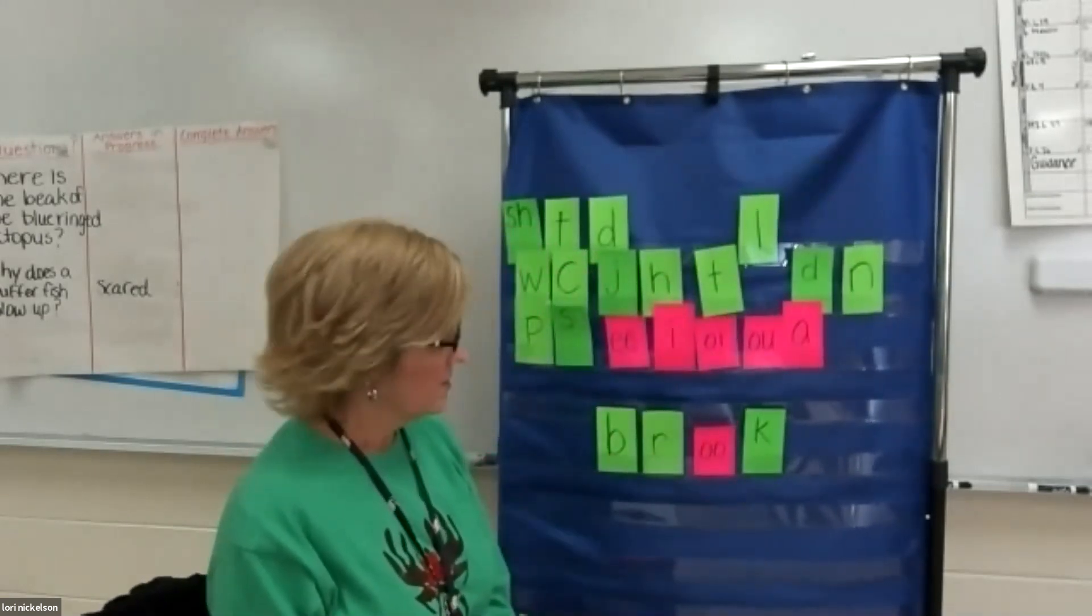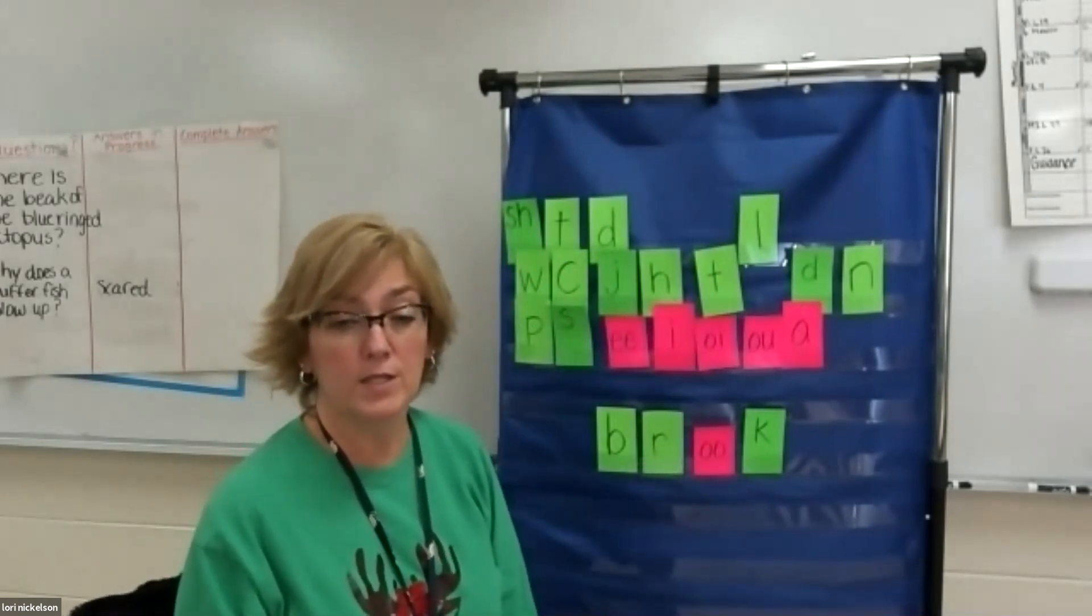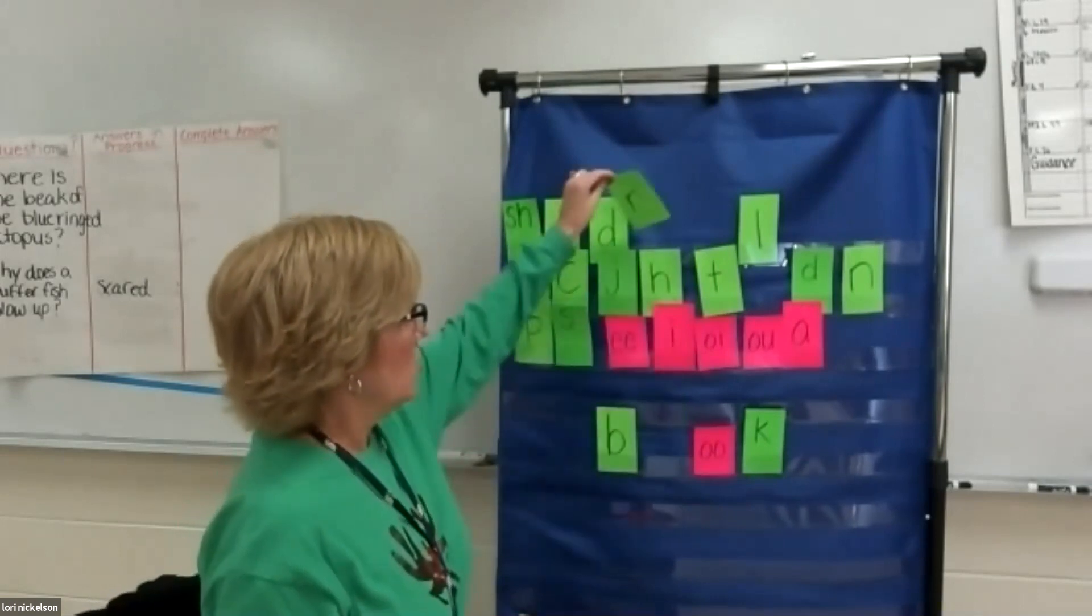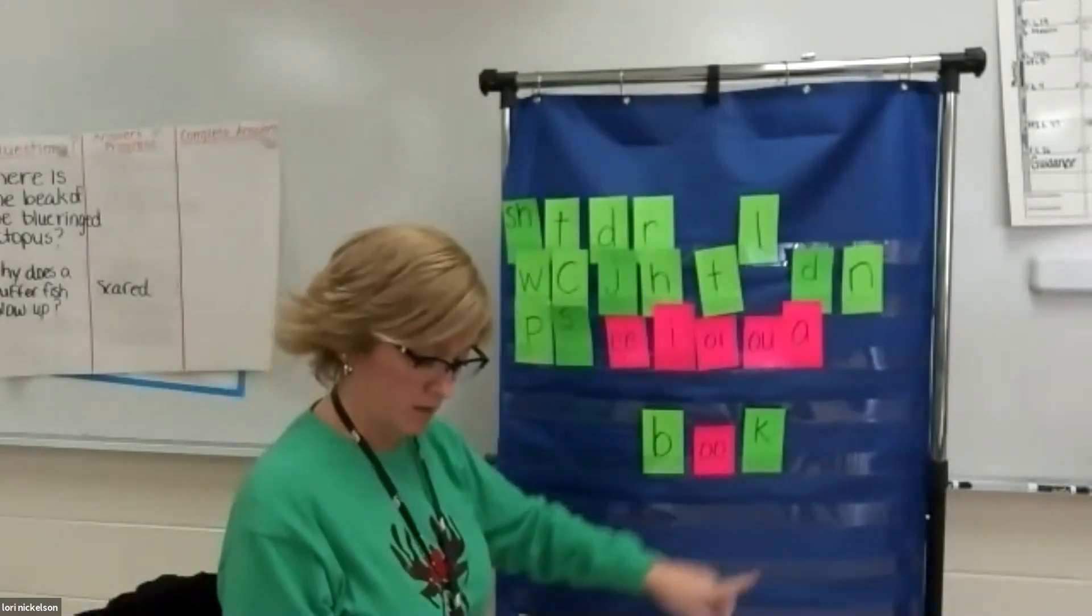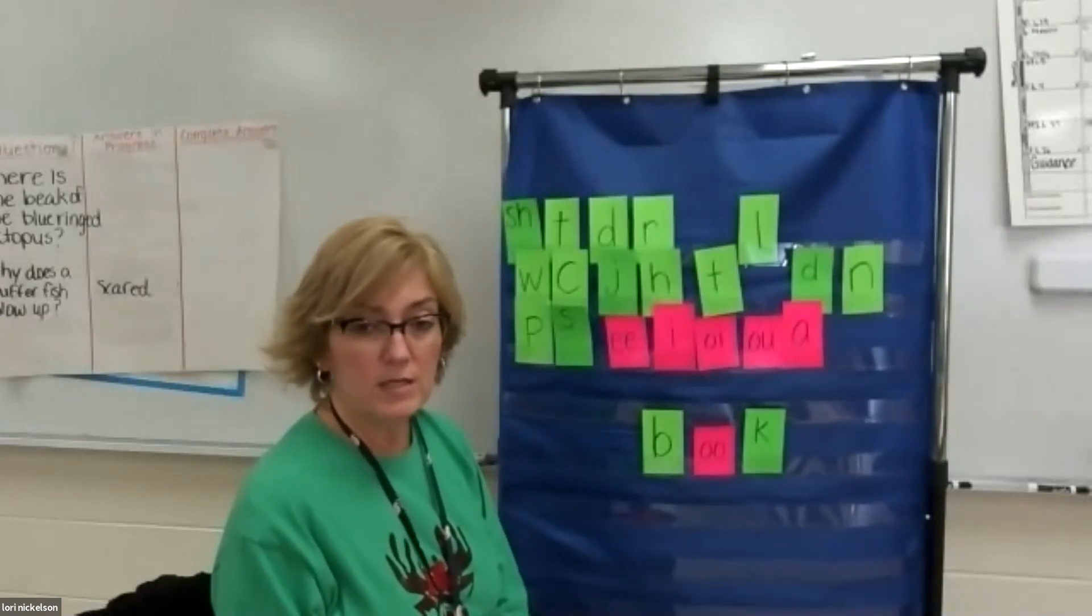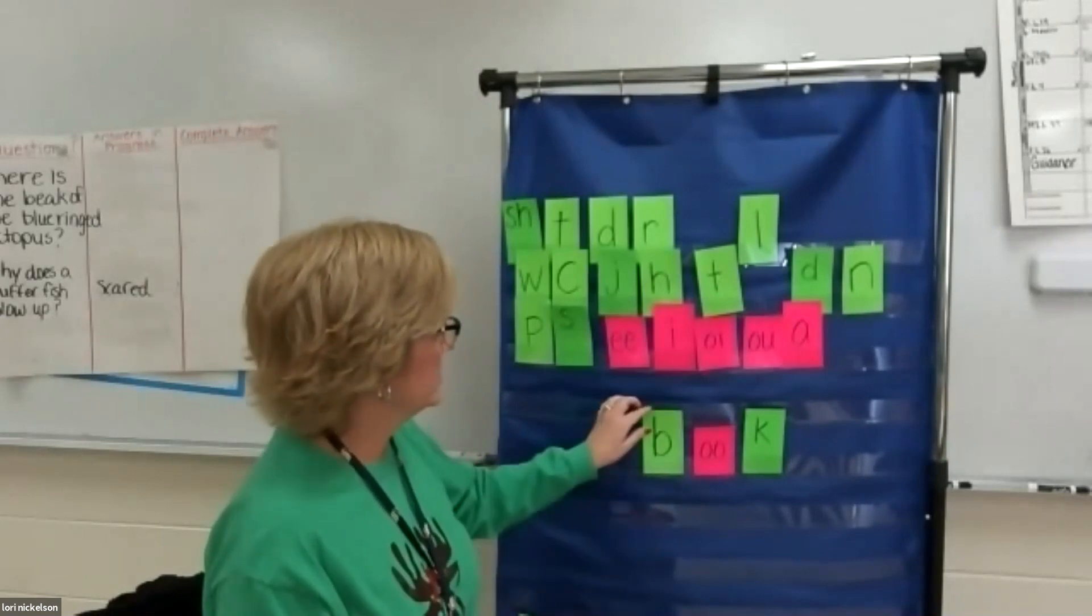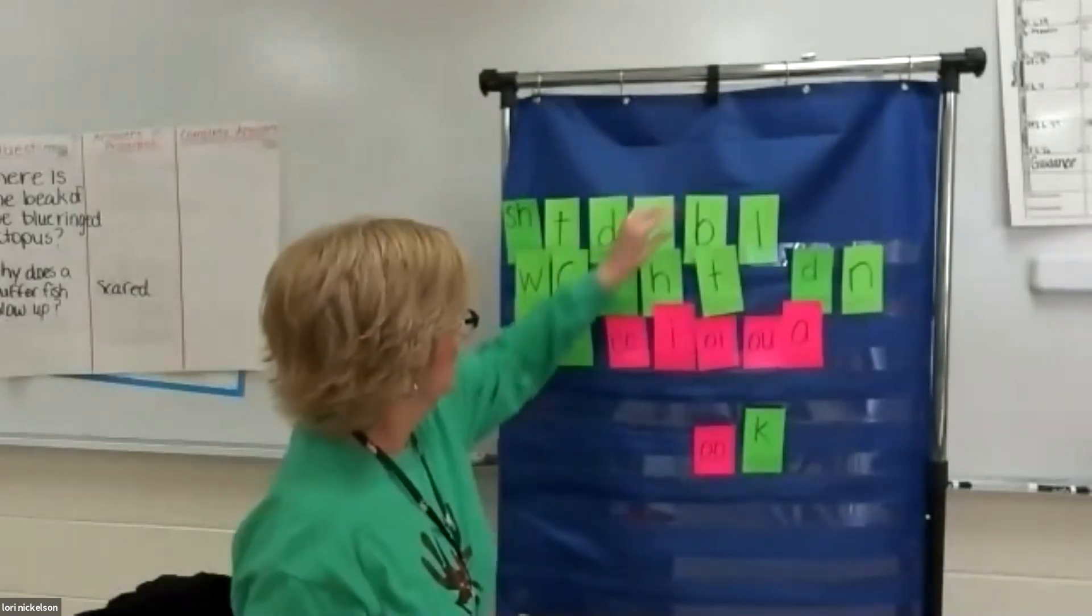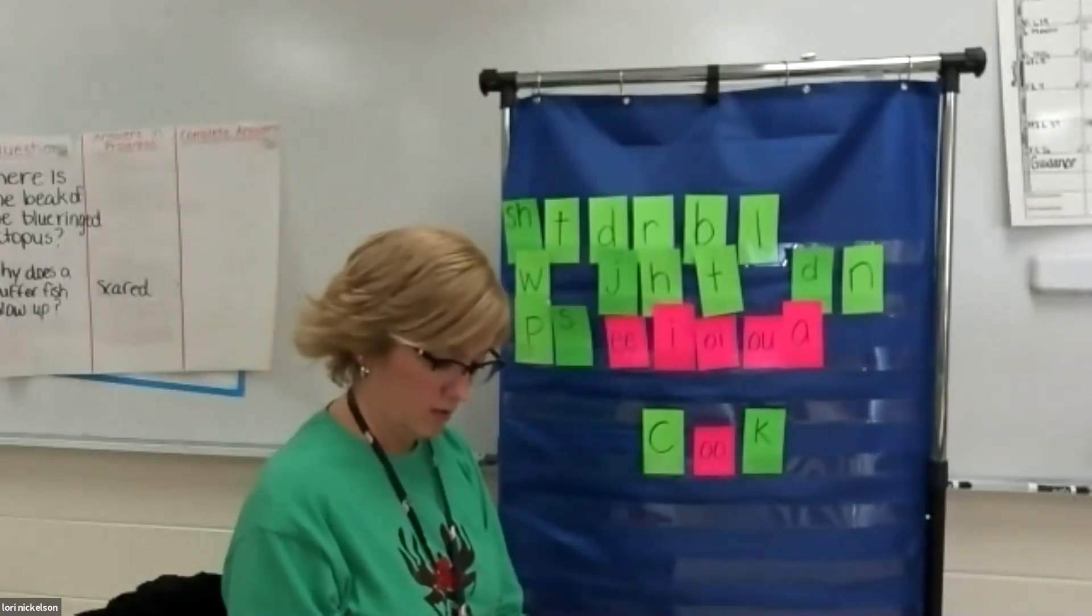So from brook, I want to make a smaller word, book. So what would I do? Take out the R, push in the B, and now I have book. Good. From book, let's make a new word cook. So I would replace the B with a C, and now I have cook. Awesome.